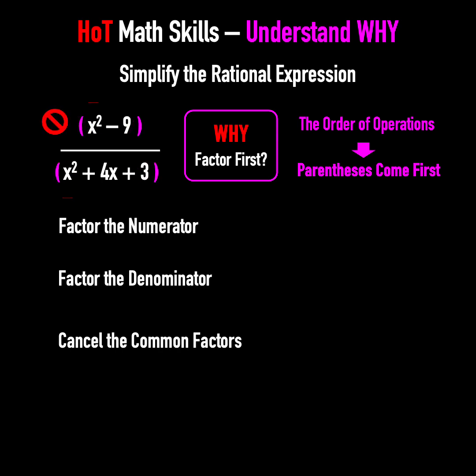Thus, you can't cancel these x-squared terms right away. Instead, factor the numerator and denominator into smaller parentheses, then cancel the entire common ones.